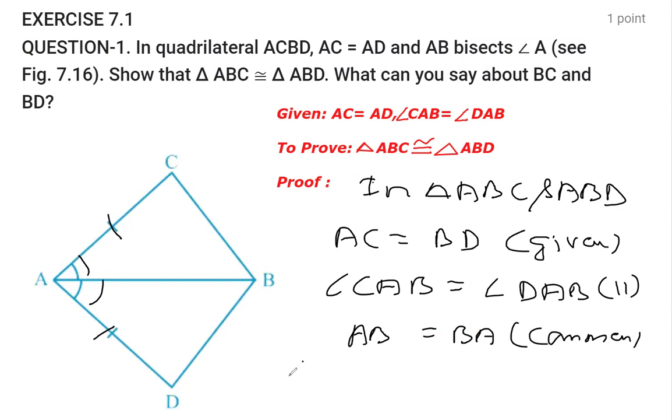So now we can say that triangle ABC is congruent to triangle ABD. This is congruent by the Side-Angle-Side property.